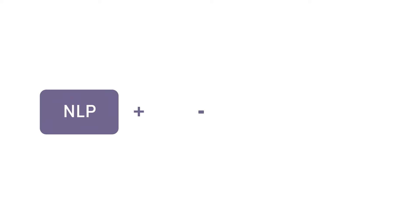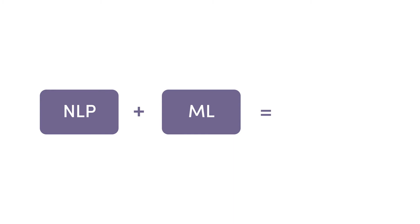So how does sentiment analysis work? Sentiment analysis layers the language people use with a combination of natural language processing and machine learning to produce key insights automatically. By using NLP and machine learning, words and phrases used can be accurately analyzed based on things like the context and order of the phrase.